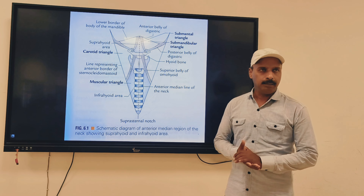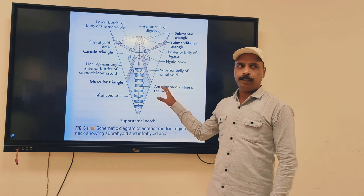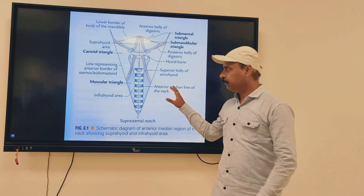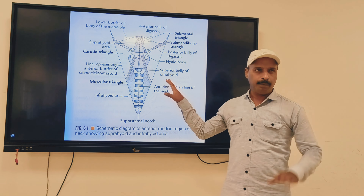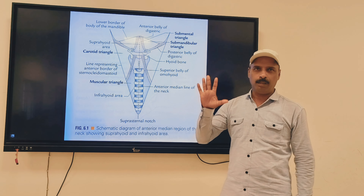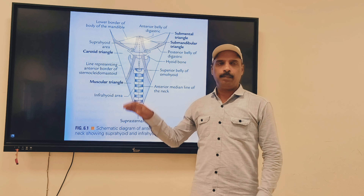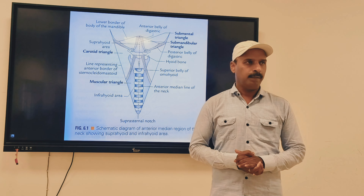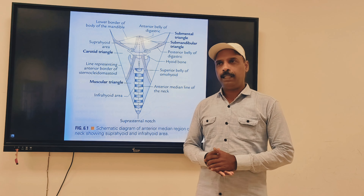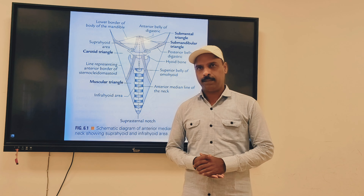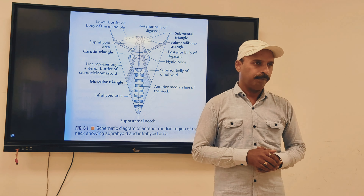I am going to start with the anterior triangle. When you see the anterior view, it is a quadrilateral space of the neck — quadrilateral means four-sided. In this you have to remember the anterior triangle and posterior triangle. This is an anterior view where you can see the trachea and hyoid bone.